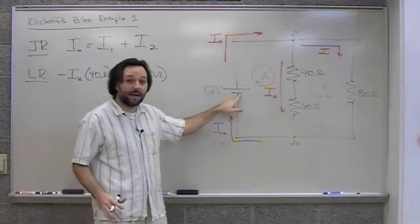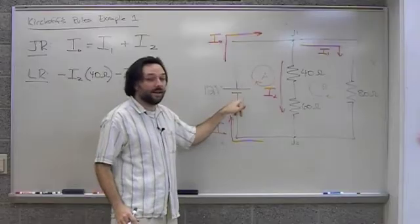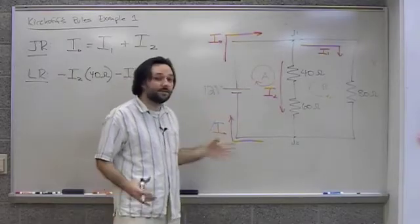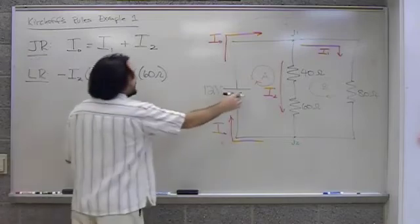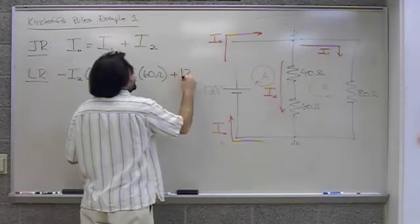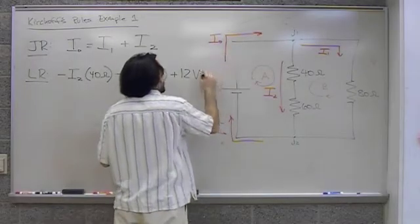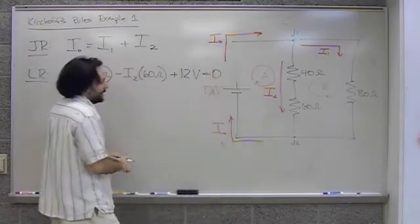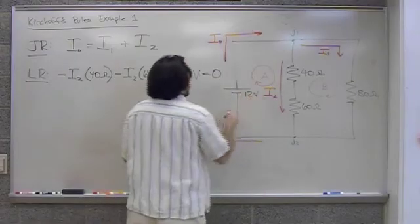I get to the battery. Now the battery, I'm traveling from low to high. Negative to positive. And when I do that, that means I have a voltage lift. So it's going to be a positive voltage here. So positive 12 volts. And then I get back to where I started. I can set that equal to zero. I'll move this over here just so I have room.